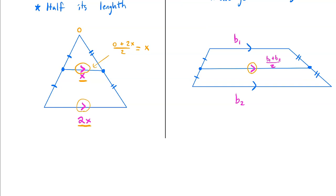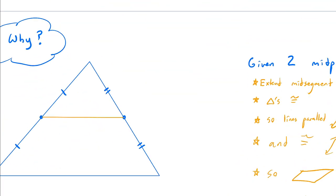So parallel to the other side, half the length, or in a trapezoid, the average of the two bases. That's it. That's the property. We'll talk about the why, and I'll do examples. But that's the nuts and the bolts.